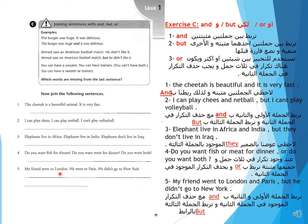Number 5: My friend went to London. He went to Paris. He didn't go to New York. So: My friend went to London and Paris — remove the repetition — but he didn't go to New York. We join sentences one and two with 'and', removing repetition, and join the third with 'but'.